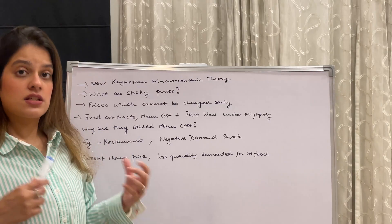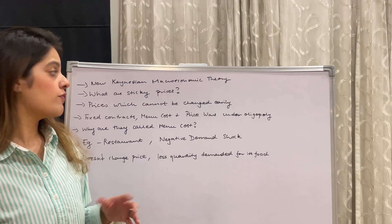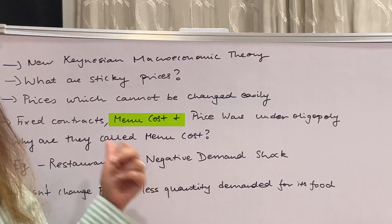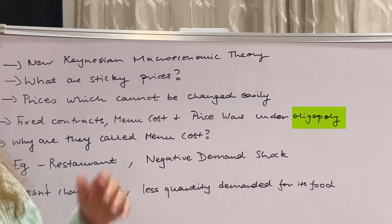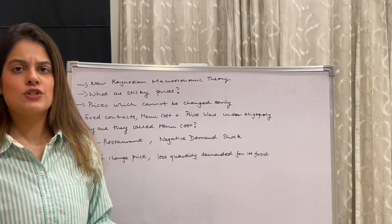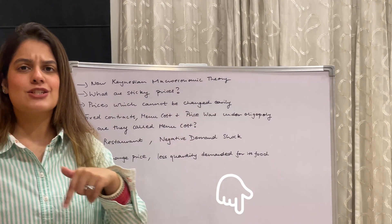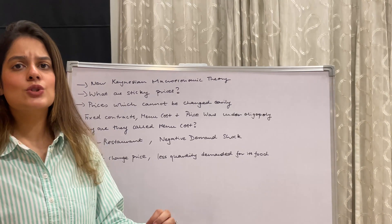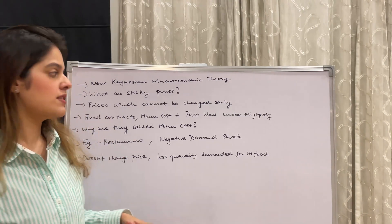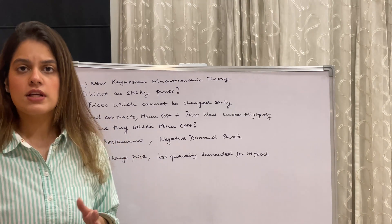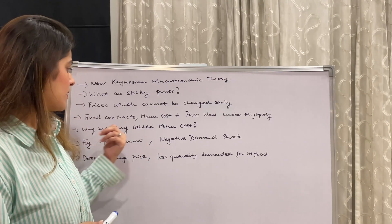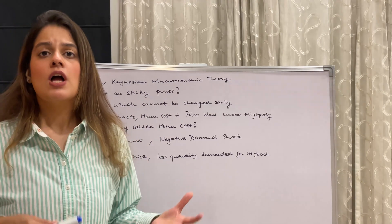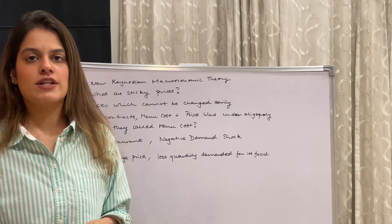Why do we face sticky prices? Because of three reasons: one, there are fixed contracts; two, menu costs, which I'll explain shortly; and three, price wars under oligopoly. These are the reasons due to which we face the sticky price theory. Now let me explain the concept of menu costs, which is why sticky prices are also known as the menu cost model.